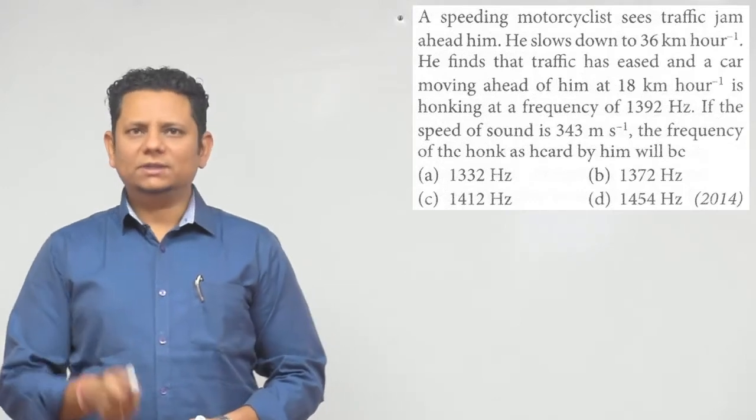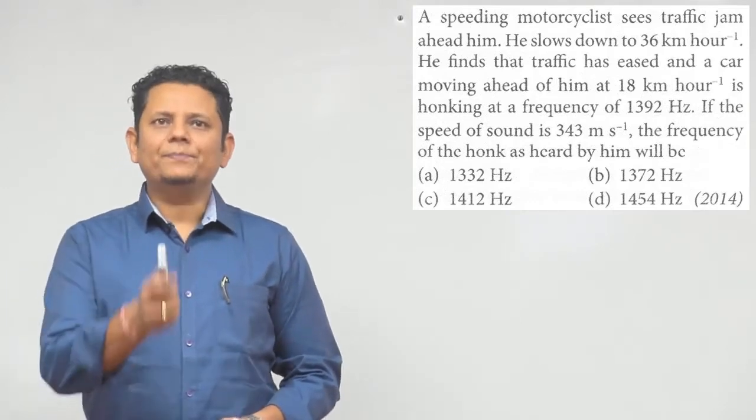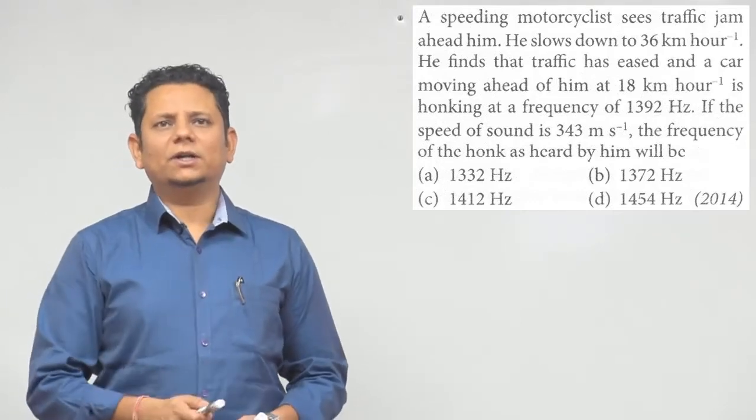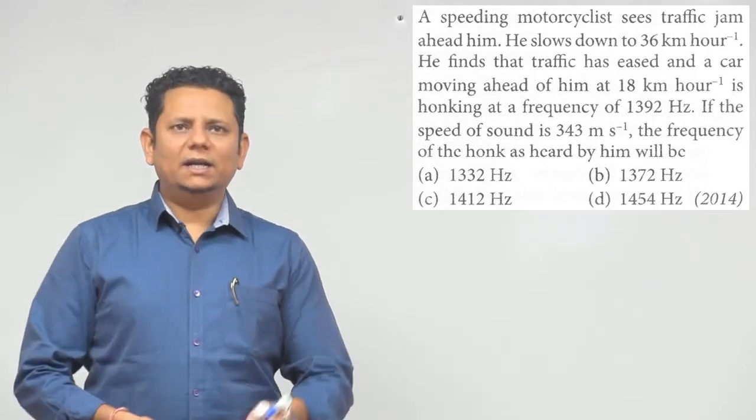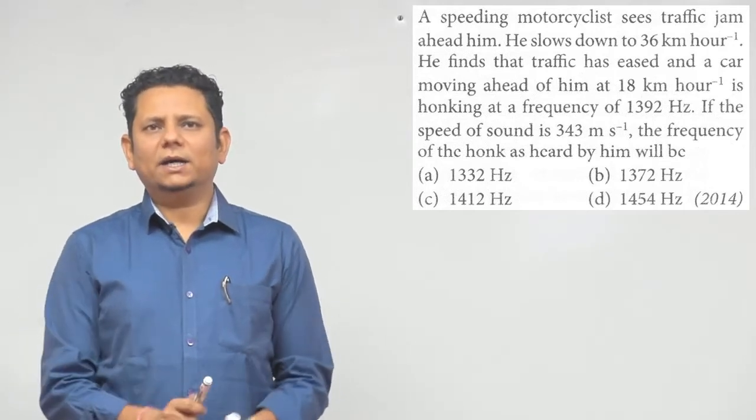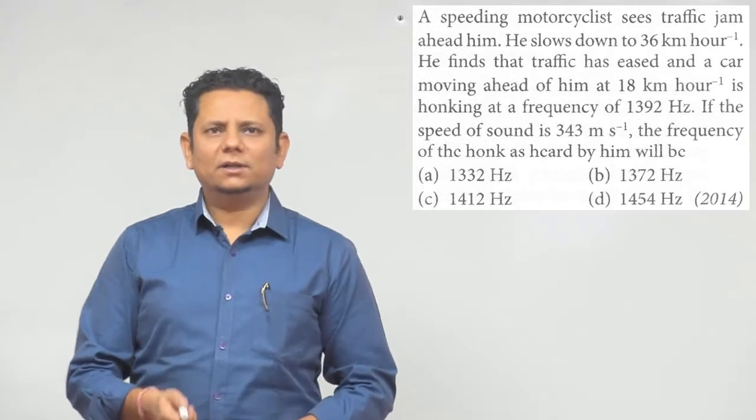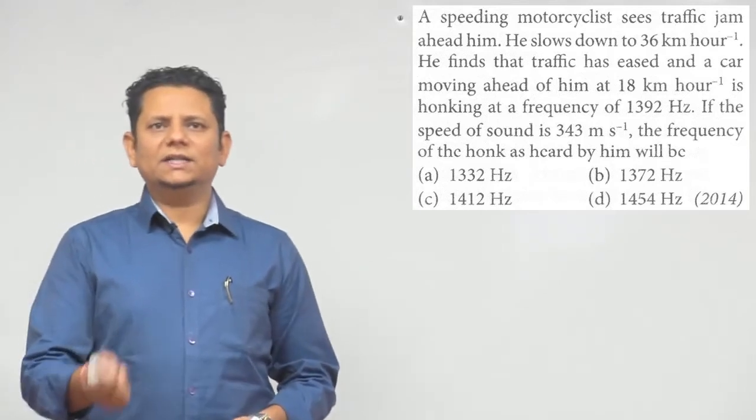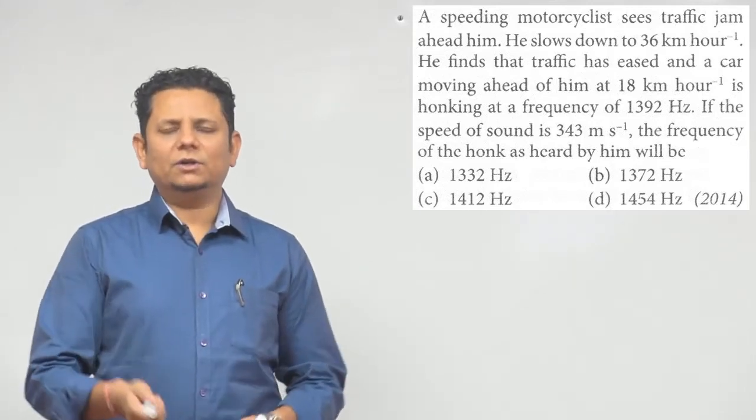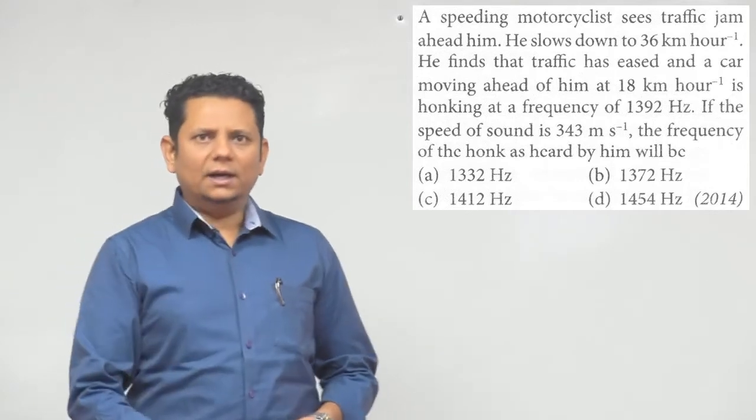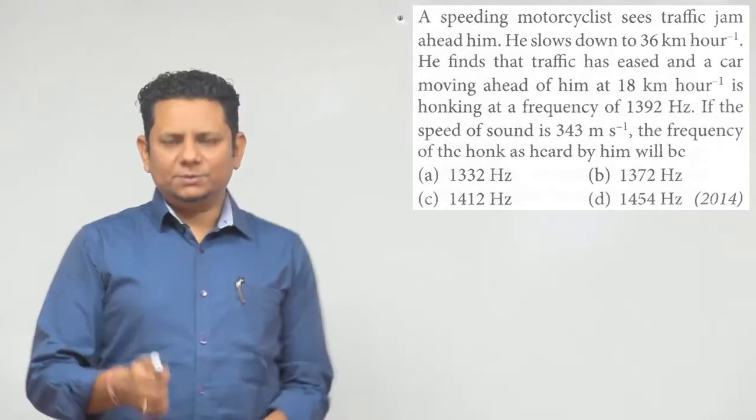is honking at a frequency of 1392 Hertz. If the speed of sound is 343 meter per second, the frequency of the honk as heard by him will be: (a) 1332 Hz, (b) 1372 Hz, (c) 1412 Hz, or (d) 1454 Hertz.